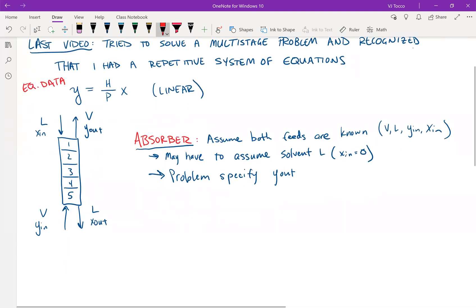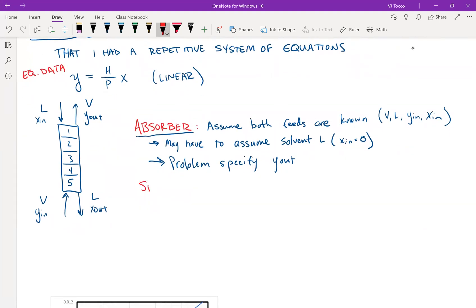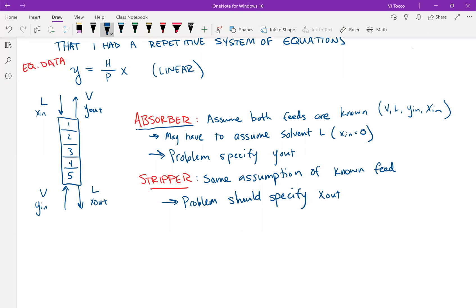And before I go ahead and derive these equations, I'm going to just do the same thing for the stripper. So for the stripper, again, I'm going to assume that both feeds are known. But instead of the problem specifying what y_out is, now you typically have a specification for x_out because as the engineer, you should have some idea of how pure you want the liquid to be. The operating lines are going to be functionally the same, just there's going to be two different forms of them depending on what is known of the problem.